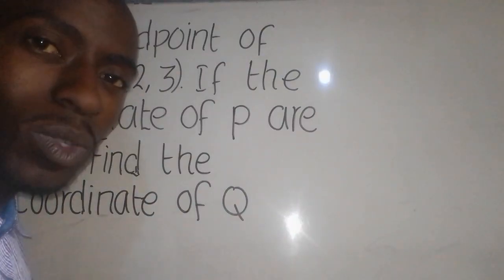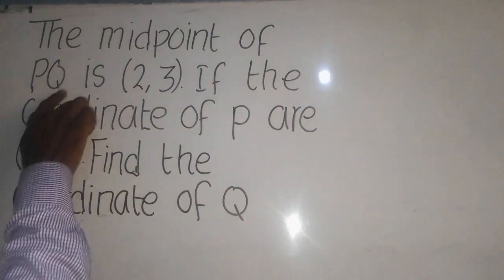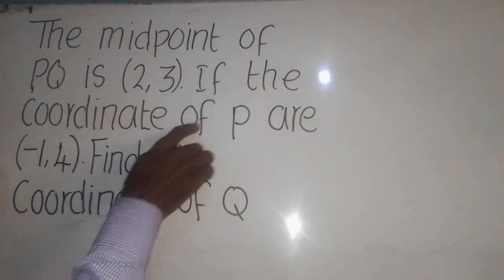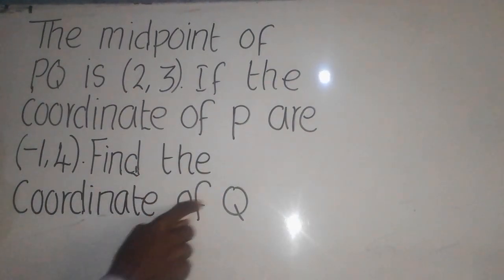We have a mathematics question that says the midpoint of PQ is (2,3). If the coordinates of P are (-1,4), find the coordinates of Q.